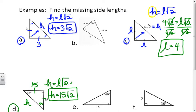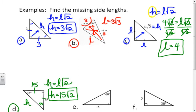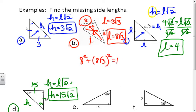Example B is a 30-60-90 triangle. I'm missing the long leg. I know the hypotenuse is 16 and this side is opposite the 30-degree angle, making it the short leg, which is 8. Both the hypotenuse and the long leg are linked to the short leg. So the long leg equals the short leg times the square root of three, giving me eight square roots of three. You can verify by checking that 8² plus (8√3)² equals 16².